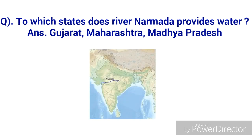To which states does the River Narmada provide water? It provides water to Gujarat, Madhya Pradesh, and Maharashtra, and it is a lifeline for Gujarat and Madhya Pradesh. This question is included because the statue is built on the River Narmada.